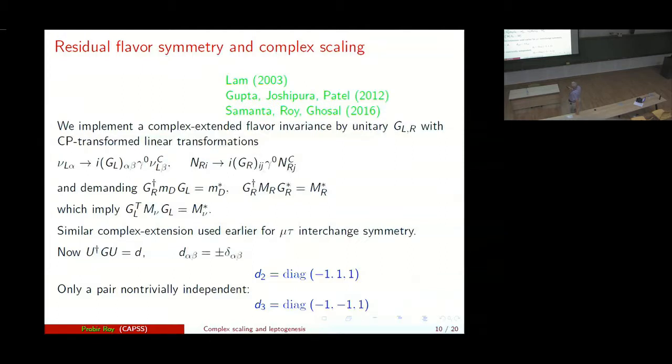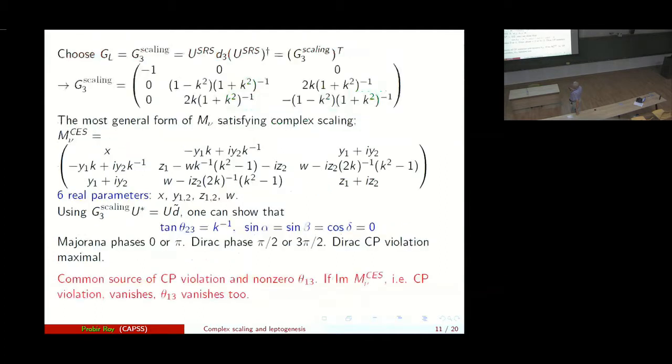So this is the idea that we have G_R dagger M_D G_L equals M_D star, G_R dagger M_R G_R star equals M_R star, where G_L and G_R are chosen as D_2 and D_3. So with such an idea, we are able to get the form of the G_3 scaling has this form.